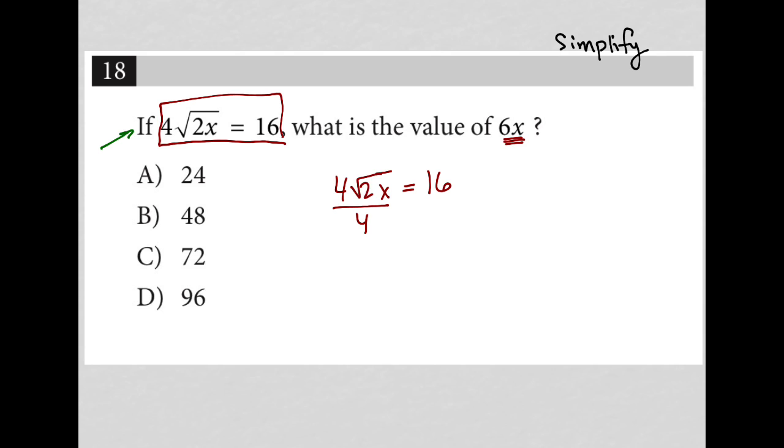So the way that I would do that is divide both sides by 4, leaving me with square root of 2x is equal to 4. I can then square both sides in order to get rid of that square root. Anytime you have the square root of something, you can square it in order to remove the square root.